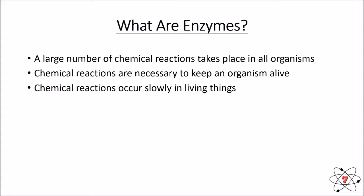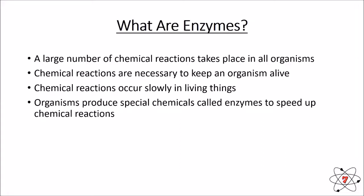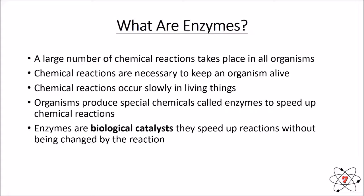Generally, chemical reactions occur very slowly in living things under normal conditions. But all organisms produce special chemicals called enzymes, and enzymes help to speed up chemical reactions. Enzymes are what we call biological catalysts. A catalyst is a chemical that will speed up a reaction without actually being involved in or changed by that reaction. A biological catalyst is a catalyst made by an organism to help speed up reactions within the organism.